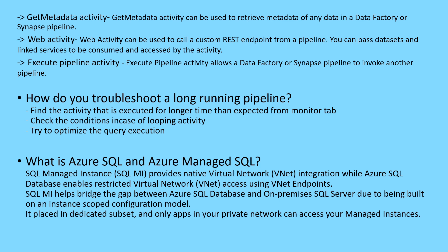The Get Metadata activity is used to retrieve metadata of any data inside Data Factory — for example, to get details like how many records are available. The Web activity is used to call REST endpoints from a pipeline. You can pass datasets and linked services to be consumed by the activity. If your source data is shared via a REST API, or if you are getting secrets from Azure Key Vault, you can use a Web activity to make those connections.